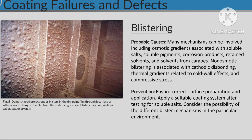Blistering. Probable causes: many mechanisms can be involved, including osmotic gradients associated with soluble salts, soluble pigments, corrosion products, retained solvents, and solvents from cargoes. Blistering is also associated with cathodic disbonding and thermal gradients. Prevention: ensure correct surface preparation and application, apply a suitable coating system after testing for soluble salts, and consider the possibility of the different blister mechanisms in the particular environment.